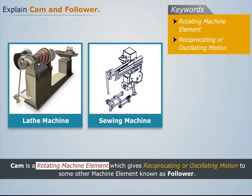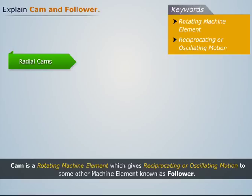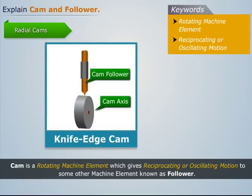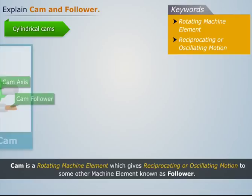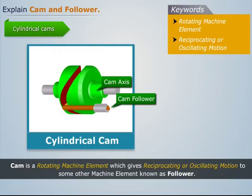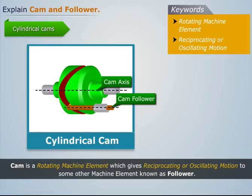A cam is a rotating machine element which gives reciprocating or oscillating motion to some other machine element known as the follower. Cams can be broadly classified into two types: radial cams and cylindrical cams. In radial cams, the follower reciprocates or oscillates in a direction perpendicular to the cam axis, whereas in cylindrical cams the follower reciprocates or oscillates about a groove in its cylindrical body in a direction parallel to the cam axis.